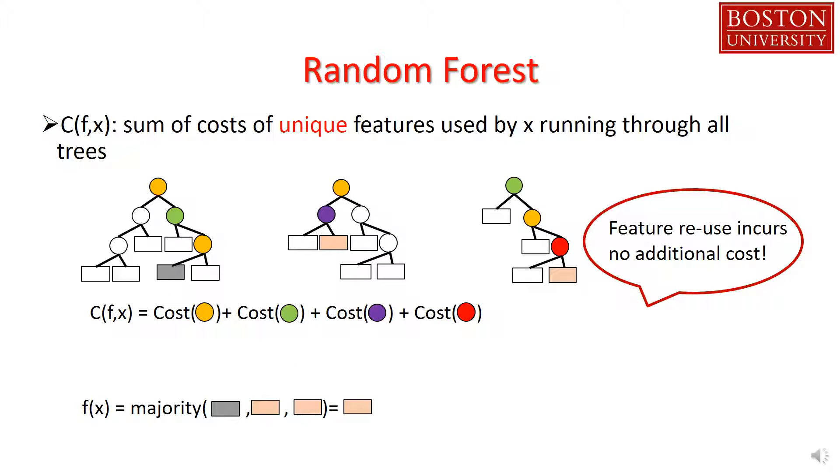A random forest is a collection of decision trees. Each internal node of a tree corresponds to a particular feature. An example is routed left or right based on its feature value at each internal node. During test time, we run the test example through all the trees and take majority vote. I've colored a path that example x follows in each of the decision trees. The different colors of the internal nodes correspond to different features.